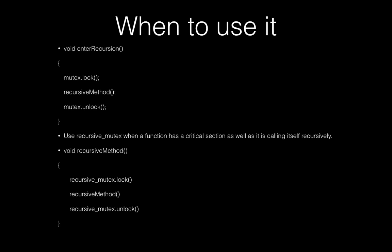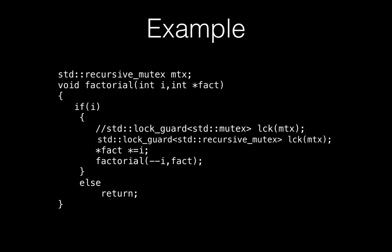Instead of writing a separate entry function, you can have the recursive method itself call recursive mutex lock and unlock — it's okay for it to lock itself many times. Let's see a simple example where you are trying to calculate a factorial and you call this method recursively. This may not be an ideal example, but it should give you an idea of how recursive mutex works. Here you have already declared a recursive mutex.